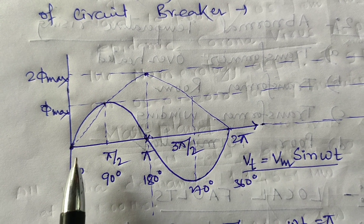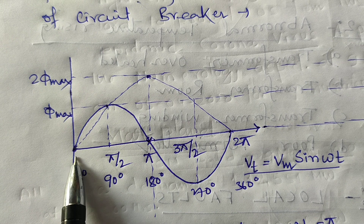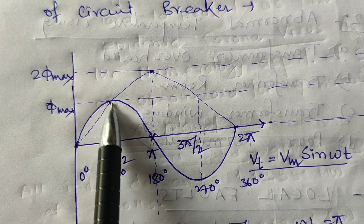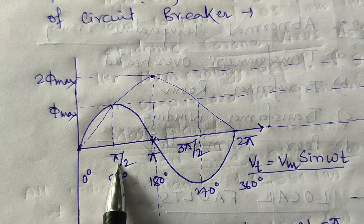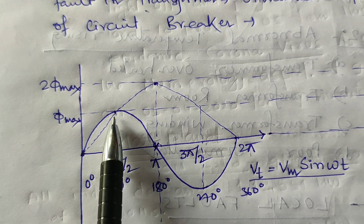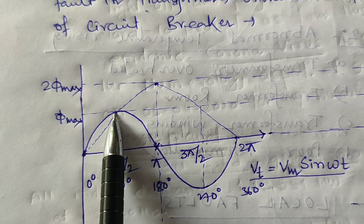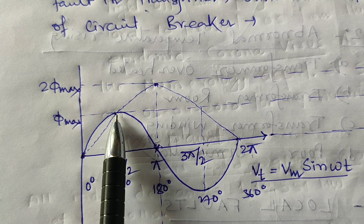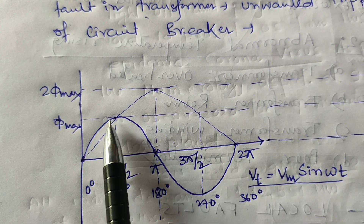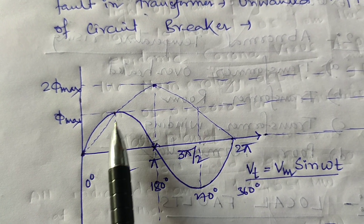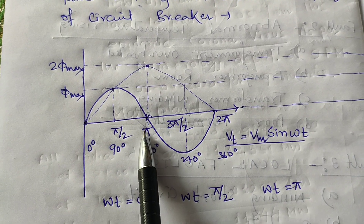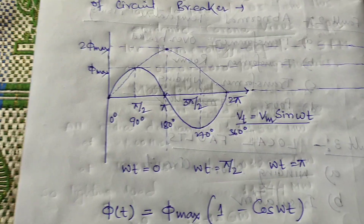During the voltage buildup, the flux of the core increases proportionally. At 90° (π/2), the flux is maximum. If the core has not reached the saturation value, the voltage increases accordingly and the flux increases accordingly as well.